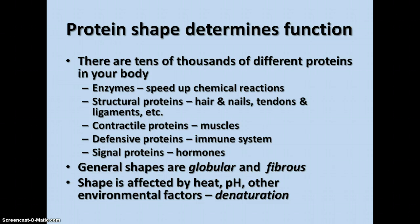The shape of a protein can be affected by heat, pH, and other environmental factors. When these factors change the shape of the protein, this is called denaturation, and denaturation affects the function of the protein — it no longer functions properly. If you think about when you cook an egg, the egg white changes from a clear liquid to a white opaque solid, and that would be the denaturing of the proteins found in the egg white.